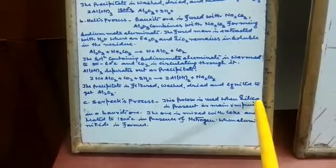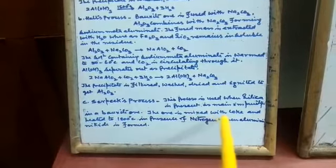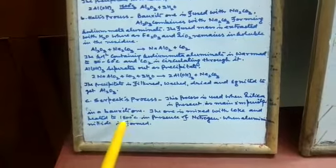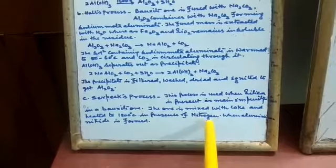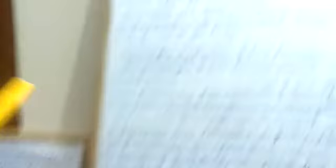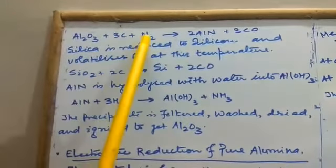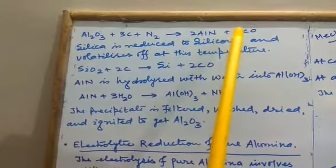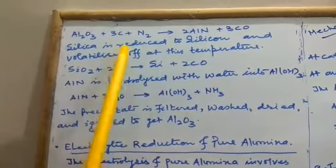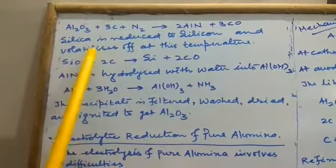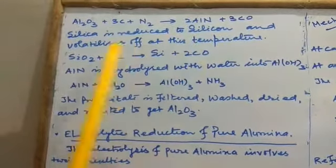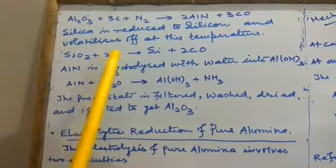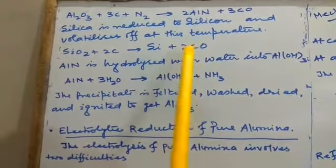Third, C, that is Serpeck process. This process is used when silica is present as main impurity in bauxite ore. The ore is mixed with coke and heated to 1800 degrees Celsius in presence of nitrogen when aluminum nitride is formed. Al2O3 plus 3C plus N2 gives 2AlN plus 3CO. Silica is reduced to silicon and volatilized off at this temperature. SiO2 plus 2C gives Si plus 2CO.